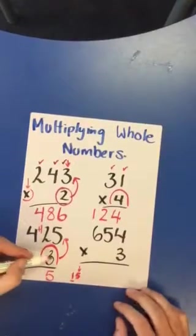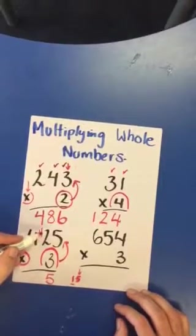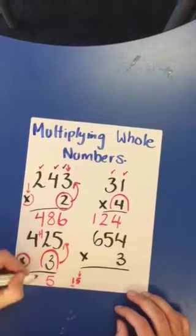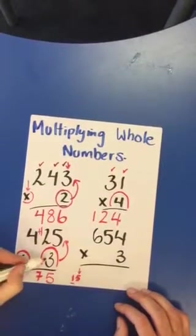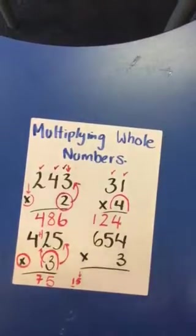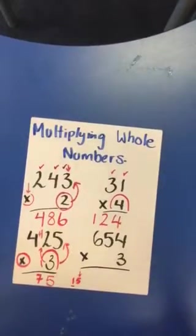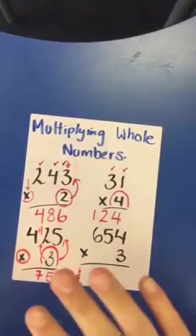3 times 2 is 6. Plus 1 equals 7. So these were still multiplied. It was 3 times 2, but plus 1 at the end. So don't forget to plus 1. Don't forget. We put the 5 down.